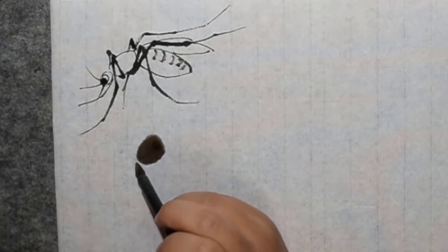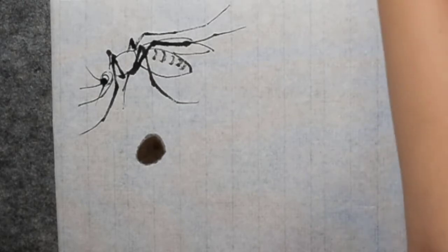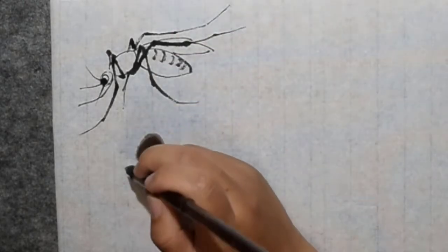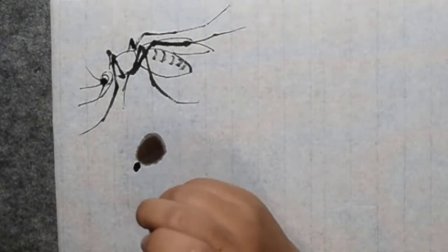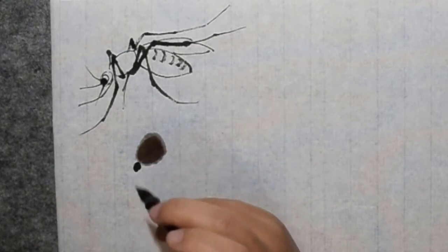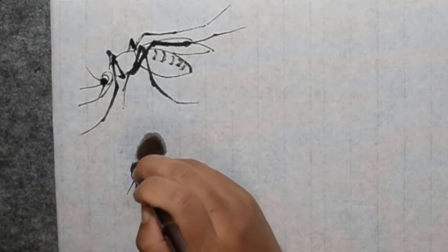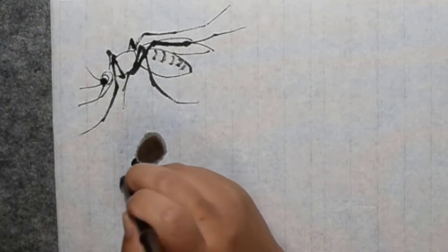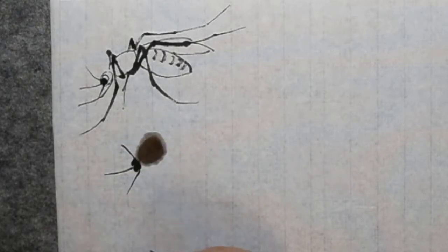And the head. Usually the head, I could just use the ink. This is an eye, okay, this is eye. And antenna here, here, okay, antenna.